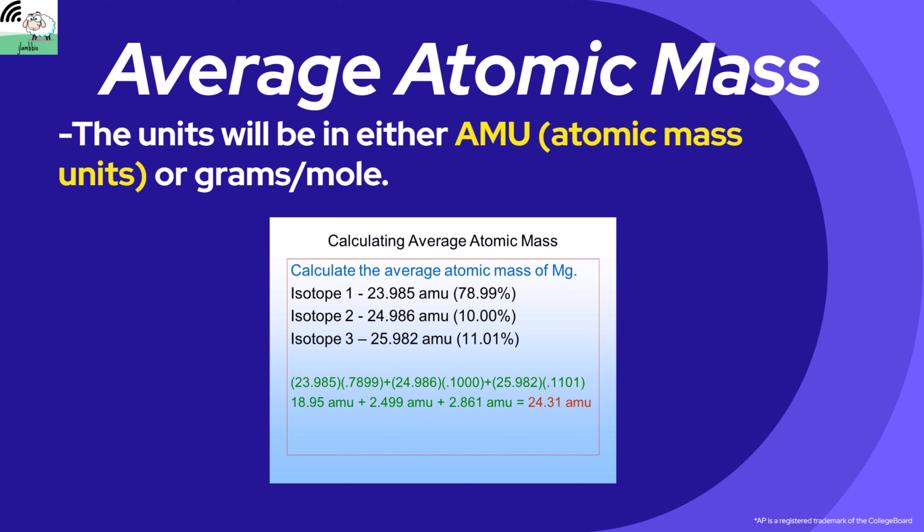We add them all together and get the average atomic mass. One easy way to check our work is to ensure that whatever we get for the weighted average is somewhere between the highest and lowest isotope mass values. The answer we get is 24.31 AMU, which is between 23.985 and 25.982. Additionally, we can get a rough estimate based on abundance — isotope number one is nearly 80% abundant, so the average atomic mass should be closer to that isotope's mass than to isotope two or three, which is indeed the case here.